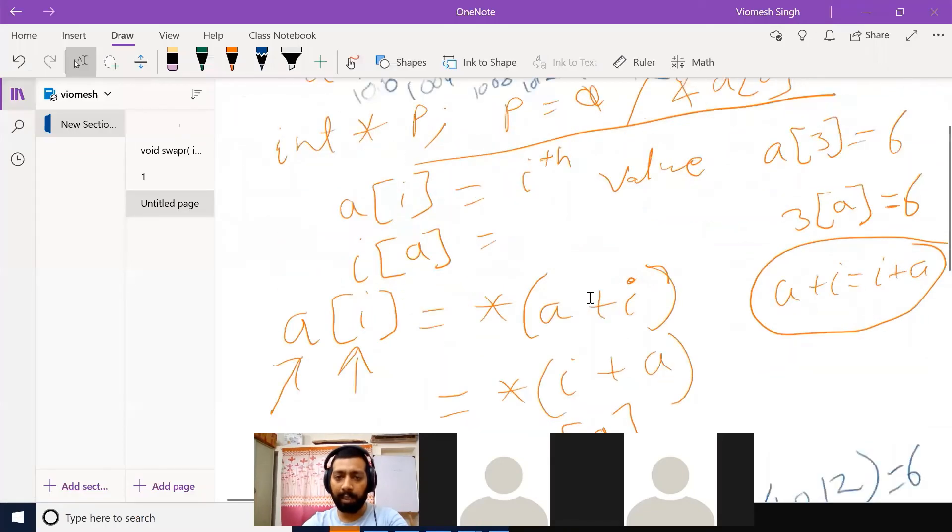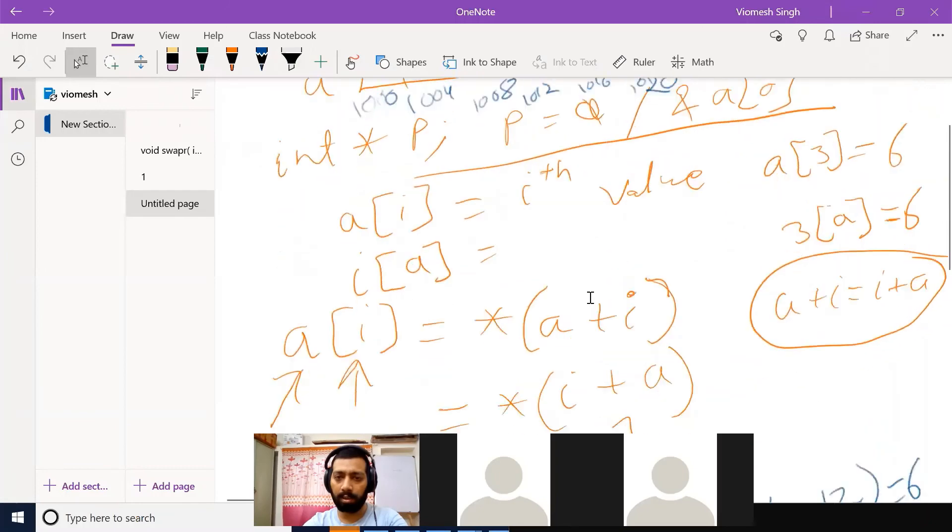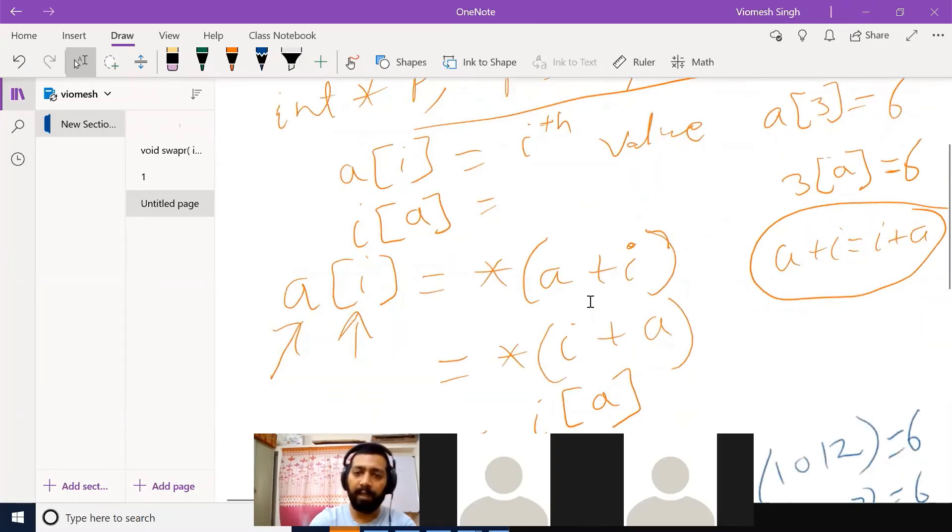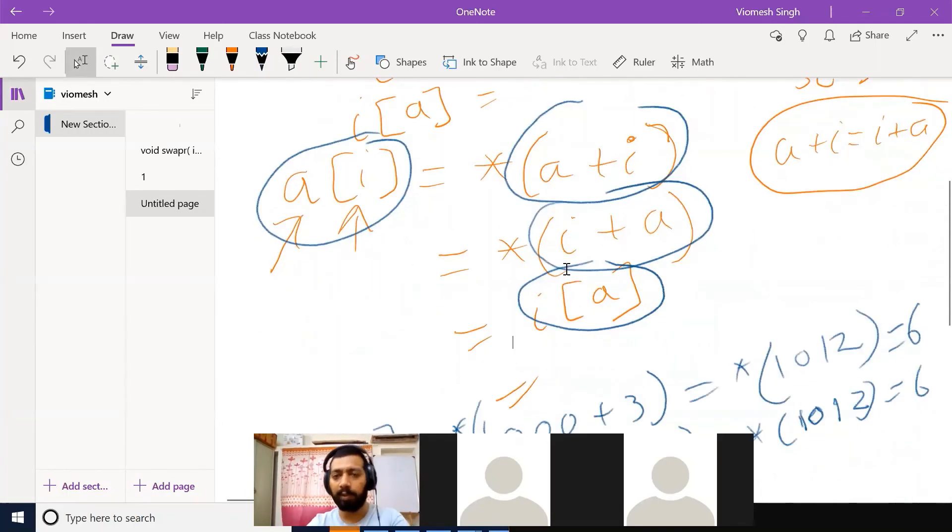That means what we are printing? We are printing a of i, a plus i, i plus a and i of a. We are printing everything to show you. What I have explained to you, is it correct or no?